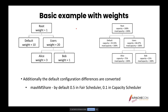Additionally, without any specific settings, default configuration differences are handled. For example, the maximum application master share is 0.5 by default in FAIR Scheduler and 0.1 in Capacity Scheduler. This is an important setting as it tells the scheduler the maximum fraction of the cluster's resources that can be used by application masters, essentially limiting running applications. During conversion, this is automatically set to 0.5 in Capacity Scheduler. On the left you can see the original FAIR Scheduler queue setup; on the right, the new Capacity Scheduler queue setup.